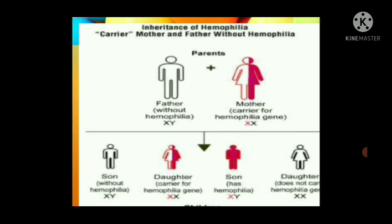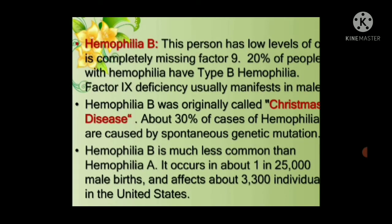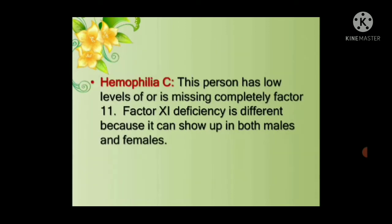Types of hemophilia: Hemophilia A, or classic hemophilia, is when the person has low levels or is completely missing clotting factor 8. About 80% of people with hemophilia have type A. Hemophilia B is due to deficiency of clotting factor 9, also known as Christmas disease. Hemophilia C involves low levels or complete absence of clotting factor 11, and it can show up in both males and females.